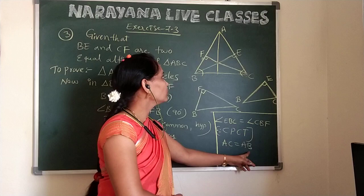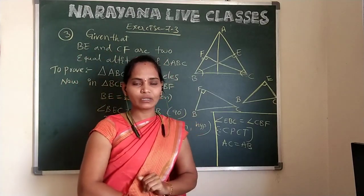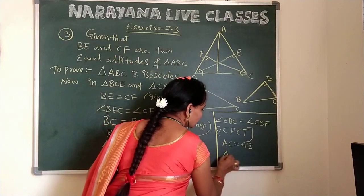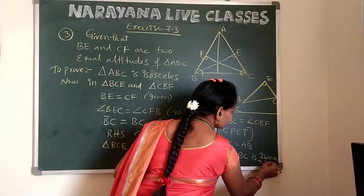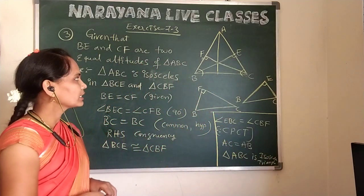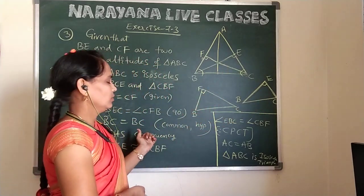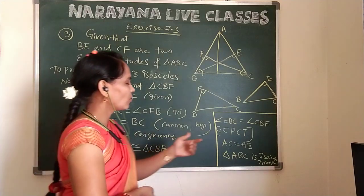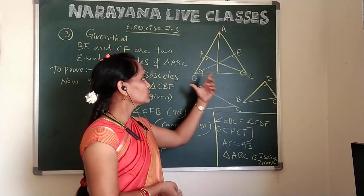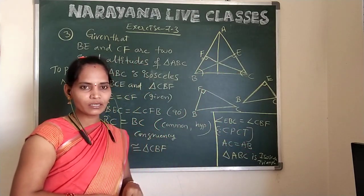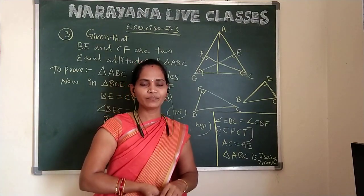When we write AC is equal to AB, these two sides are equal. Whenever in a triangle two sides are equal, we can say that triangle ABC is an isosceles triangle. Hence proved — triangle ABC is an isosceles triangle. First take the two triangles, show they are congruent by RHS, then by CPCT the angles are equal, giving AC equal to AB. So triangle ABC is isosceles. I hope you understood. Thank you.